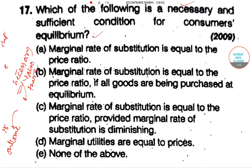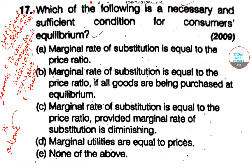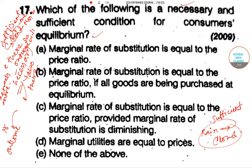Sufficient means that if the condition is there, the outcome will surely follow. For example, if there is rain, then surely there was cloud. So 'rain implies cloud' — that is the necessary condition. And 'cloud implies rain' is the sufficient condition.